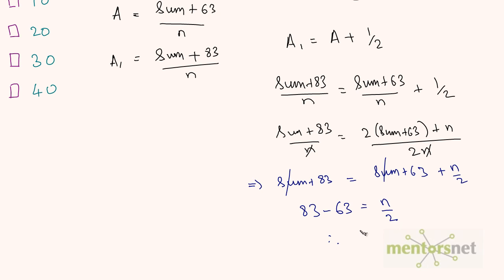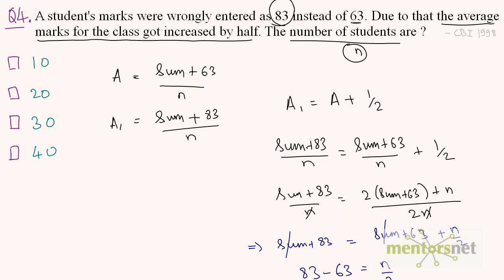Therefore, 83 minus 63 is 20, so n equals 20 times 2, which is 40. There are 40 students in the class.